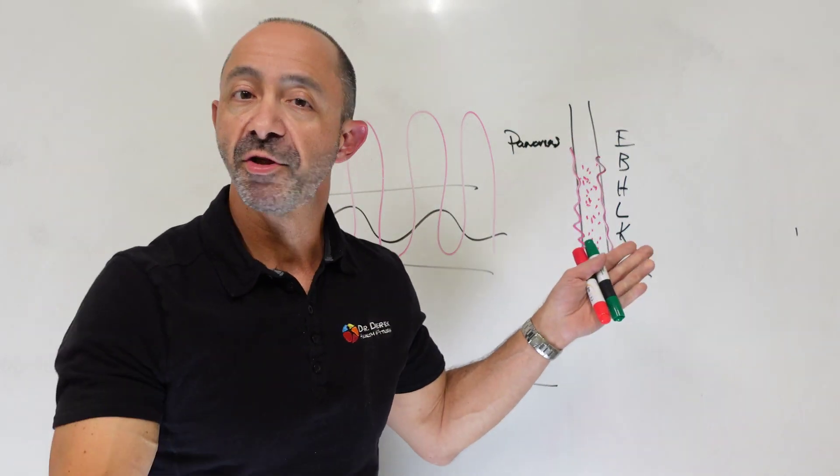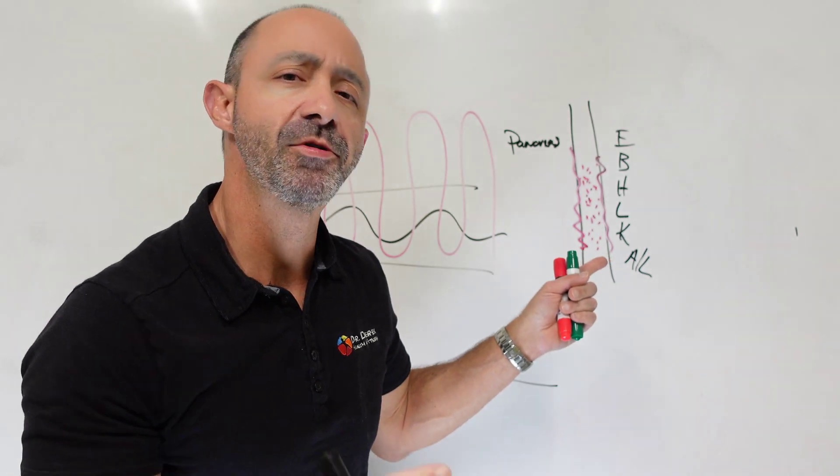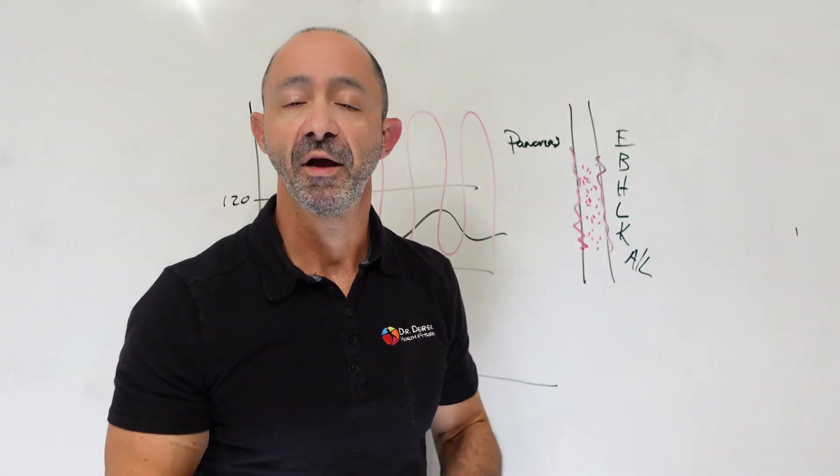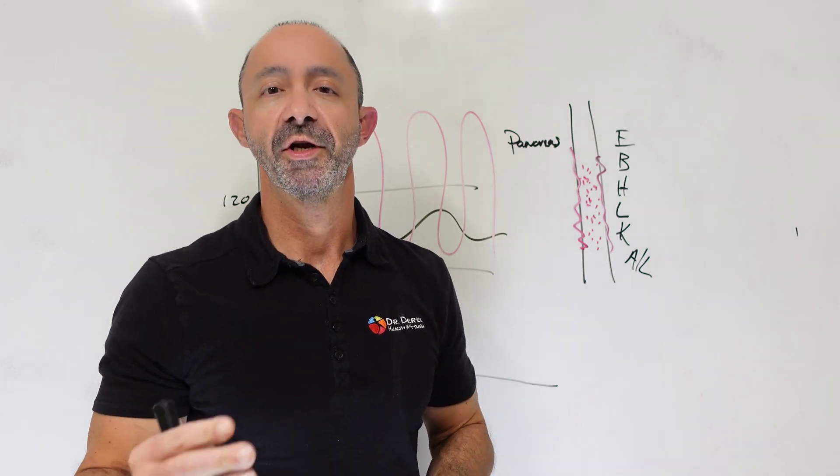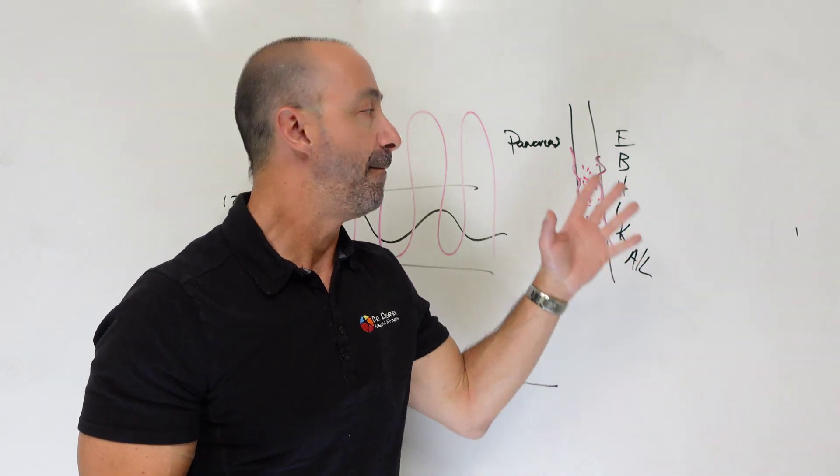That security system is called your pancreas. And the pancreas, just like that very smart security system, monitors this 24-7, 365 days a year, every part of your entire life, unless you are unfortunate enough to be born with type 1 diabetes. So your pancreas monitors it.